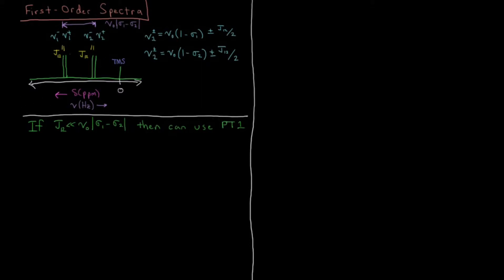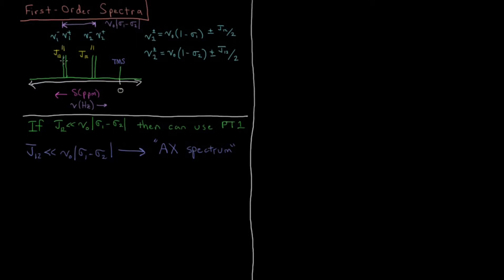We can have different types of spectra based on whether or not this condition is met. If J12 is much, much less than nu0 times the absolute value of sigma1 minus sigma2, and these are the only two peaks on the spectrum, we would call this an AX spectrum. The A and X labeling uses letters that are far apart in the alphabet — just like peak A and peak X are far apart on the spectrum — split by a frequency far greater than the amount at which they are coupled.